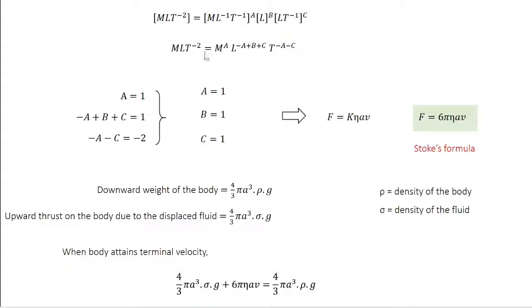This is going to be MLT^-2 equal to M^A, L^(-A+B+C), and T^(-A-C). Compare the powers of same parameters on either side. Powers of M, A equals 1. Powers of L, -A + B + C equals 1. Powers of T, -A - C equals -2. From the first equation, we get A equals 1. Substitute in the third equation, you get C equals 1. Substitute these two values in the second equation, you get B equals 1. So F equals K eta A V. The specific value of K is 6 pi. Viscous force F equals 6 pi eta A V. This is known as Stokes formula.